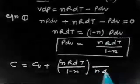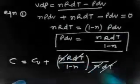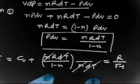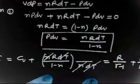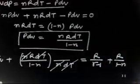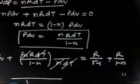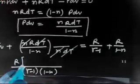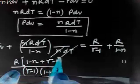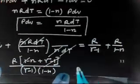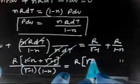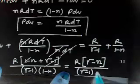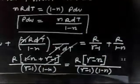Since Cv equals R divided by (gamma minus 1), we can write C equals R/(gamma minus 1) plus R/(1 minus n). Taking a common denominator of (gamma minus 1)(1 minus n), and combining: the numerator becomes (1 minus n) plus (gamma minus 1), simplifying to (gamma minus n). Therefore the heat capacity for a polytropic process is C equals R(gamma minus n) divided by (gamma minus 1)(1 minus n).